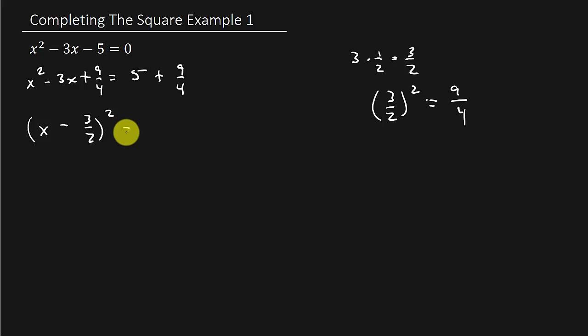And then this is going to be, what is that, 29 over 4. Remember, that's 5 over 1. Get a common denominator.